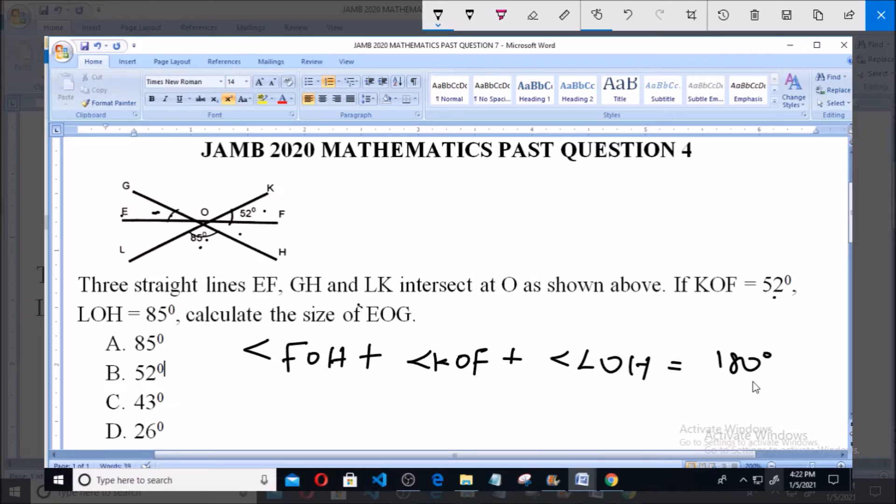is sum up to 180 degrees. So from this we can simply see that angle FOH is equal to 180 minus 52 plus 85, and that is equals to 180 minus 137, so this is equals to...